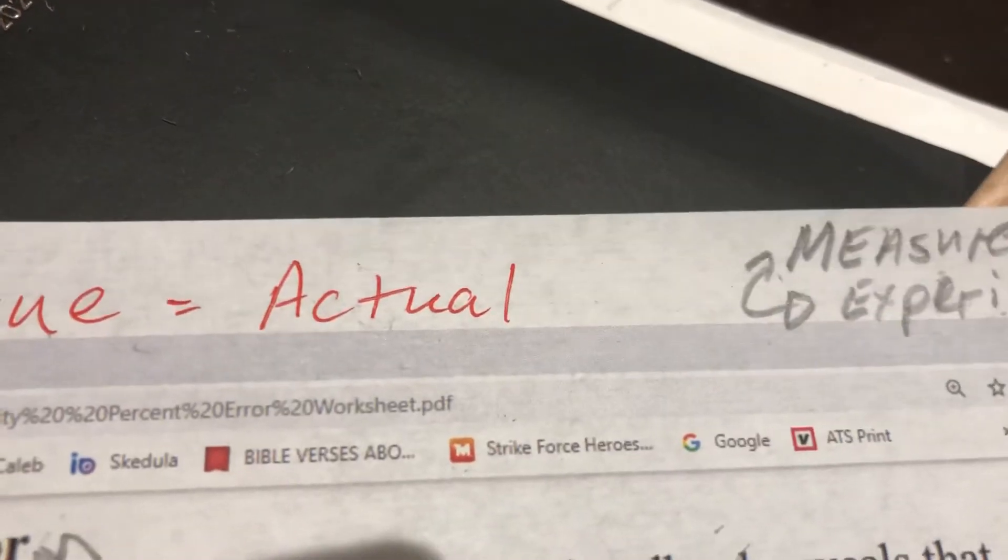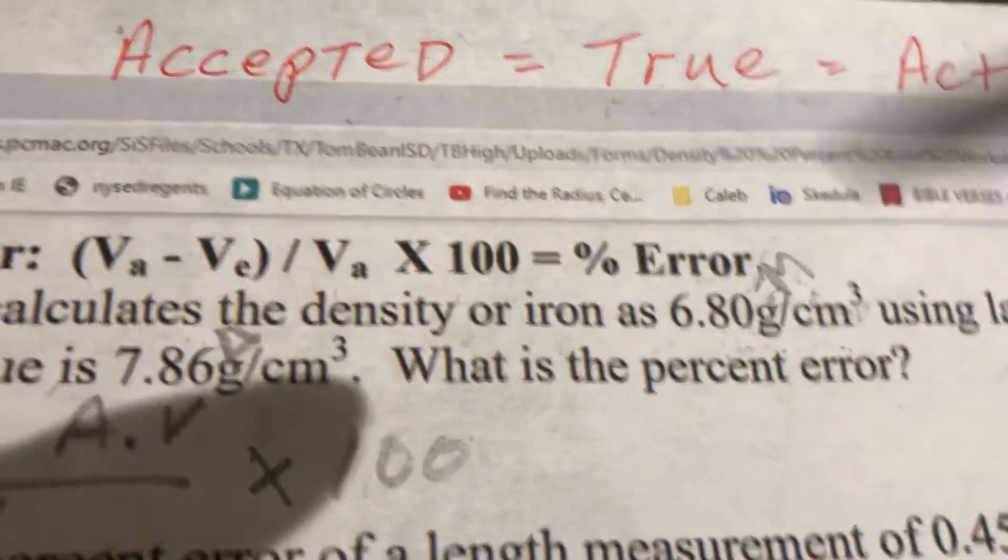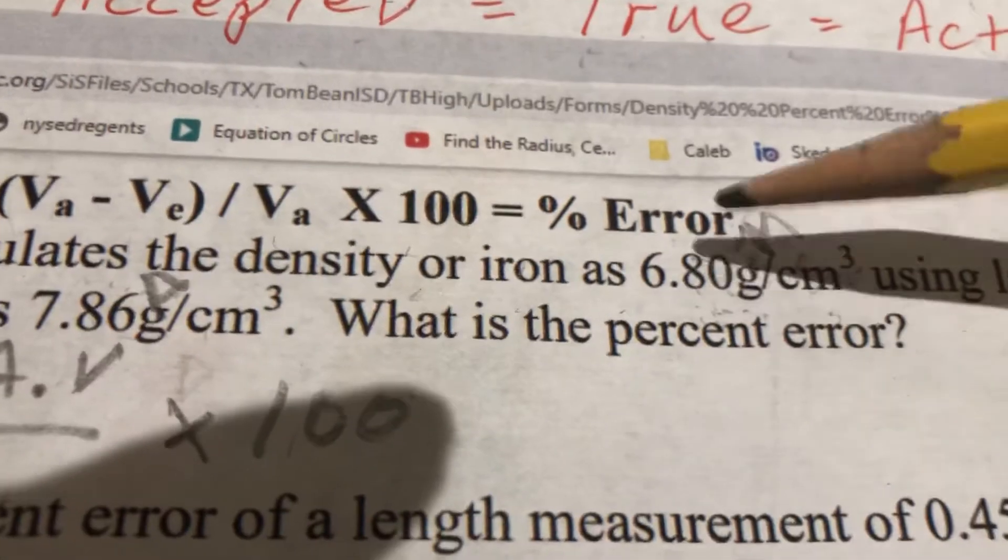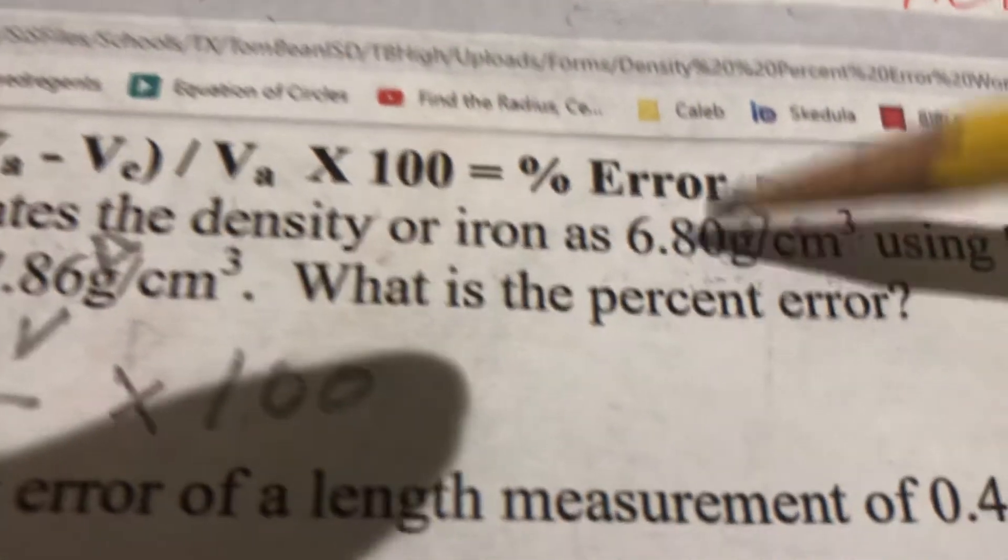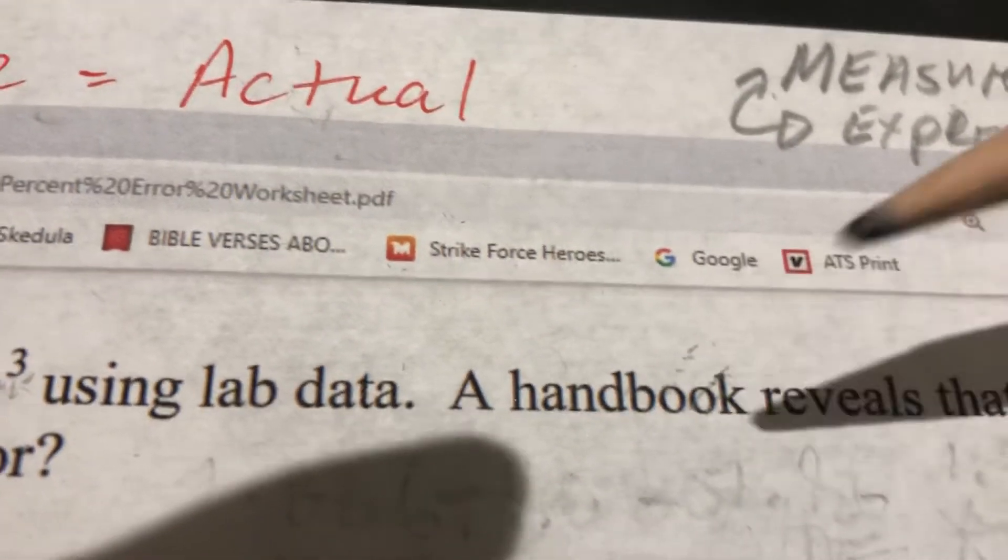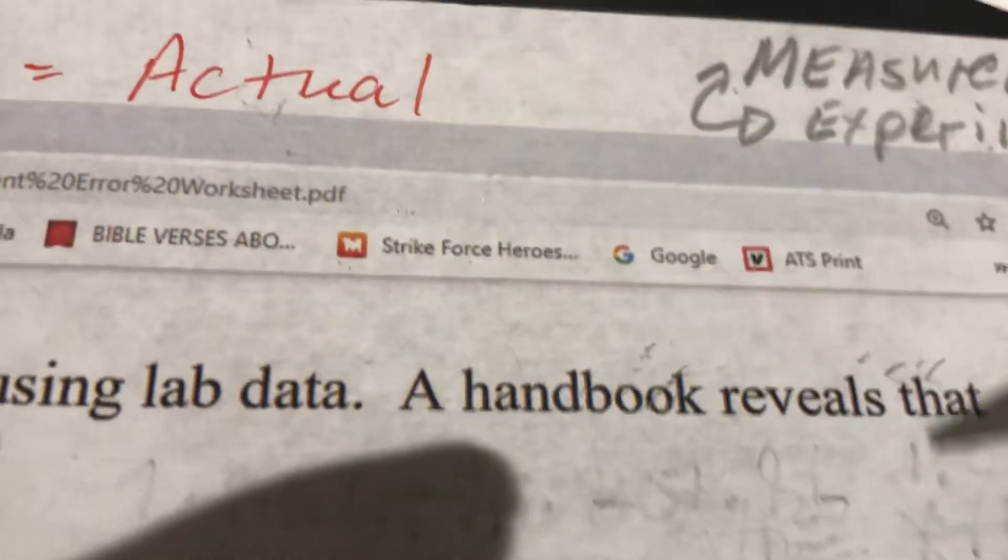So measured or experimental value. All right, no problem. So you know for a fact that this is your MV, your measured value, and you continue reading. Now, a handbook, now this handbook has going to have what in it? It's going to have the actual value in it.